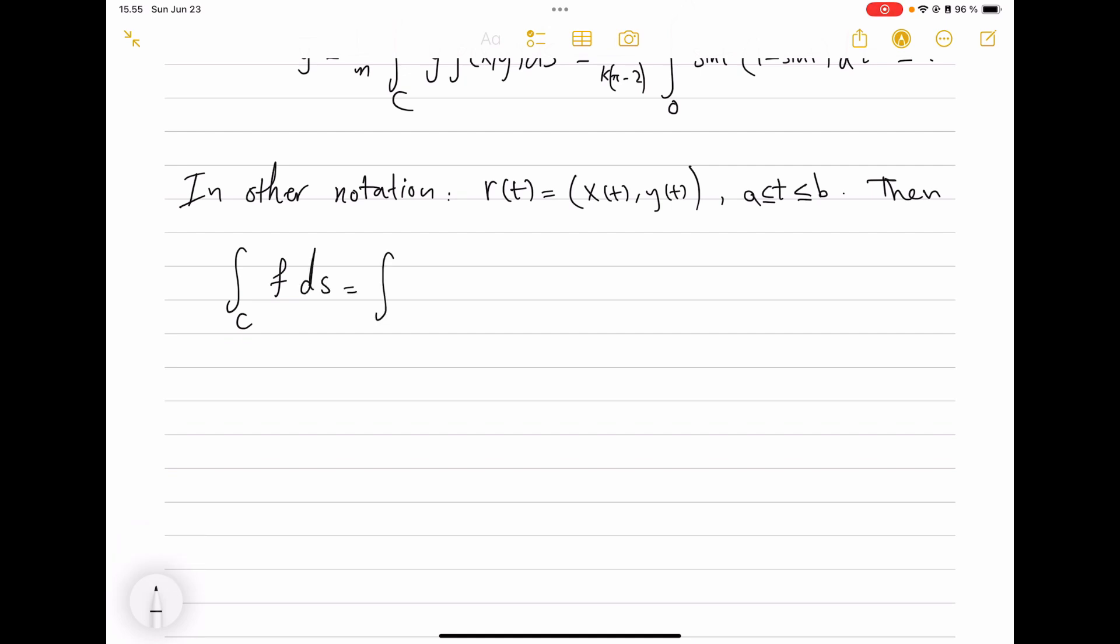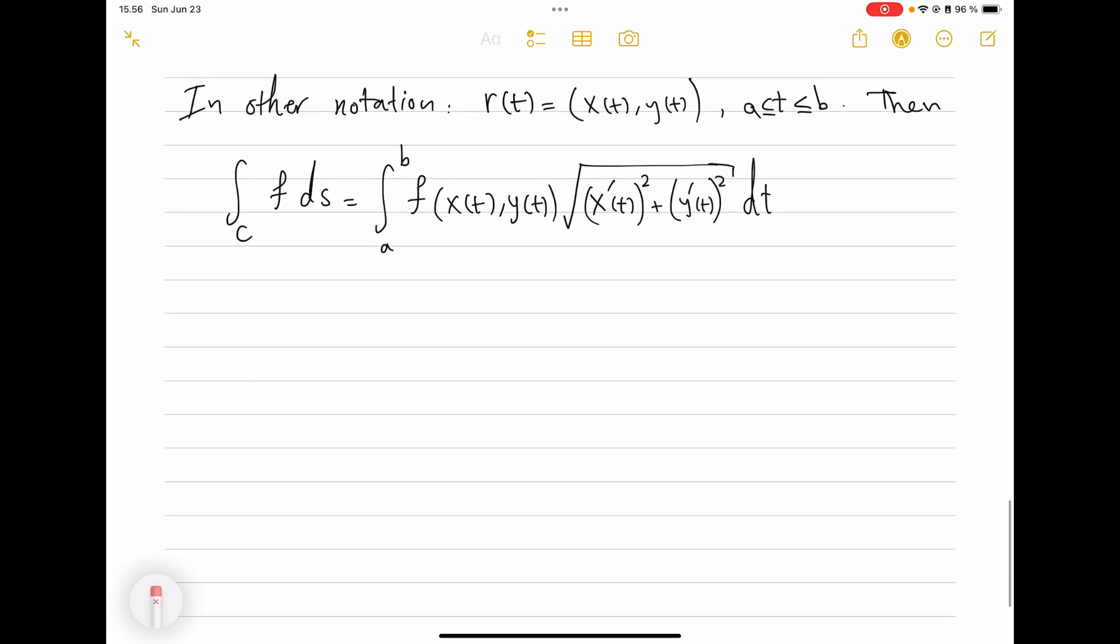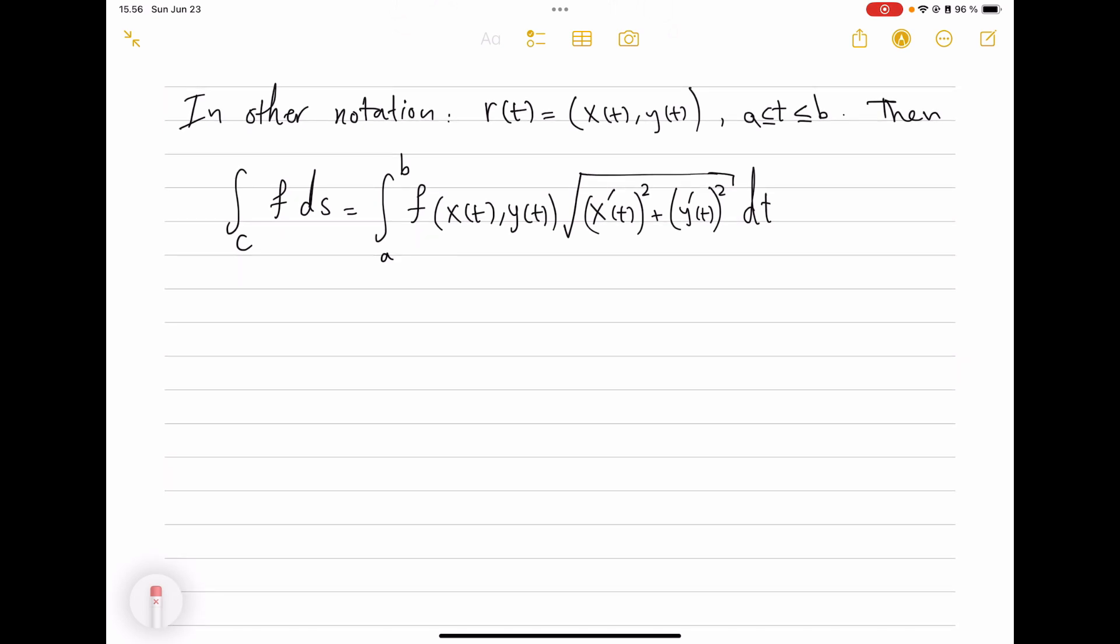Suppose that r(t) is often written as (x(t), y(t)). So if you have a curve in 2D, then its x and y coordinates are given by functions x(t) and y(t). Then the integral over the curve of some f of (x,y)—let me actually avoid this—before parameterization I just don't write any input for f. So ∫f ds by definition will be ∫[a to b] f evaluated at r(t).